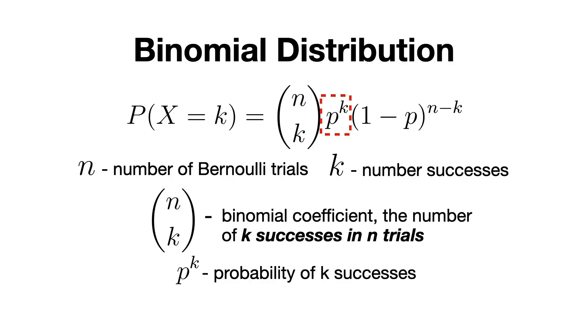Finally, quite similar to the Bernoulli distribution, we have p^k and (1-p)^(n-k), which represent the probability of successes and failures, respectively.